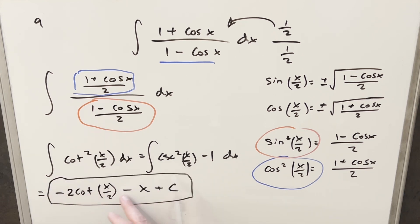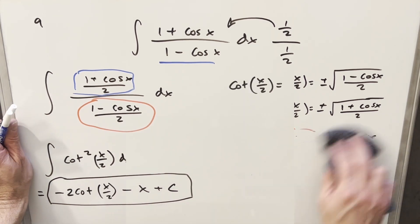And this here is a fine solution, but what I also want to do is get this solution in terms of just x rather than having this half angle here. So let me just get a little more space for that.